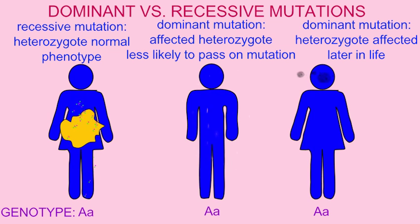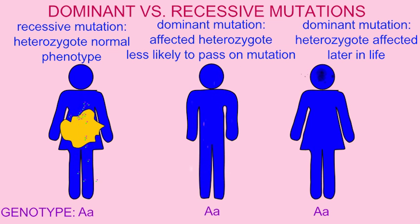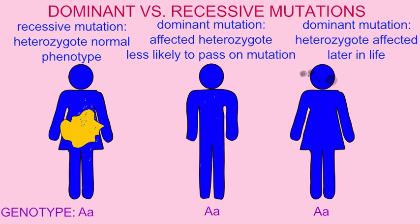Many of the dominant mutations which cause disorders are things which affect the heterozygote later in life. For example, Alzheimer's disorder can be caused by a number of dominant mutations. By the time an individual realizes that they are expressing the mutant phenotype, they have already had children and passed the gene for the disorder on to the next generation. As a result, natural selection acts more quickly on dominant mutations which affect individuals earlier in life.